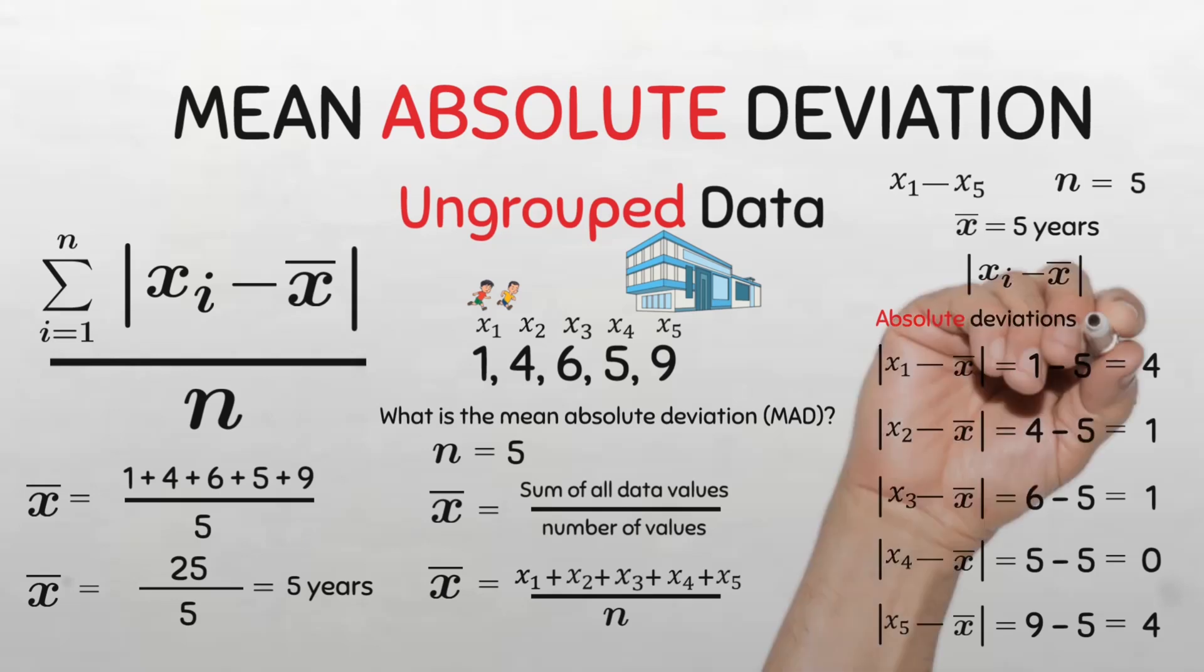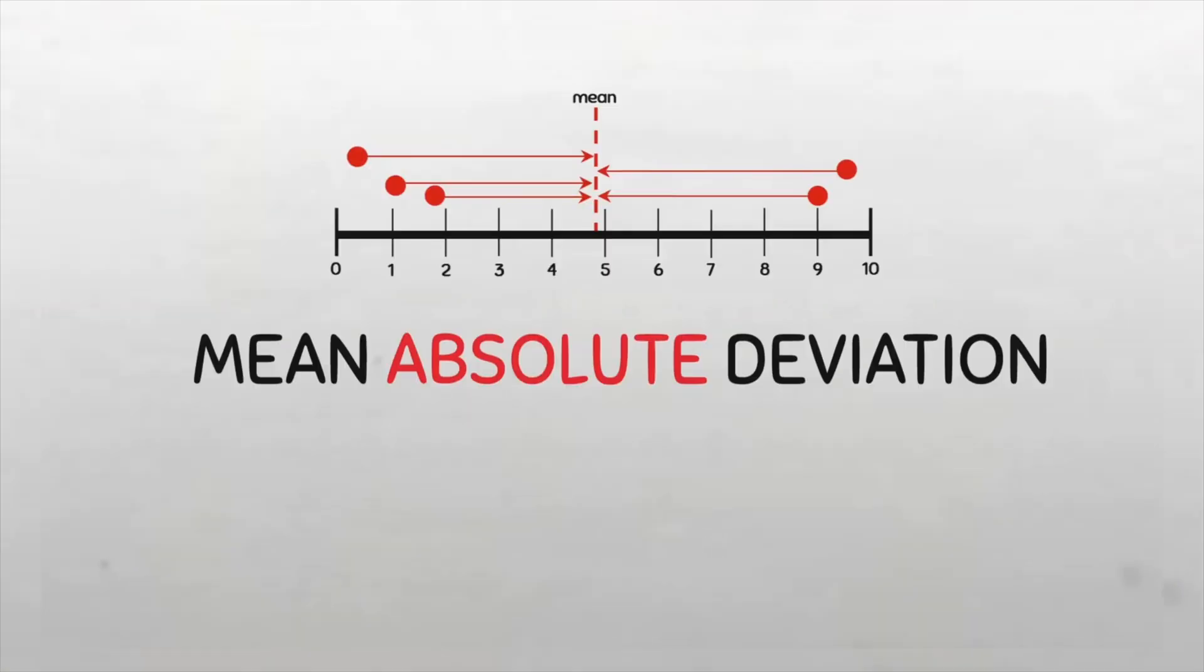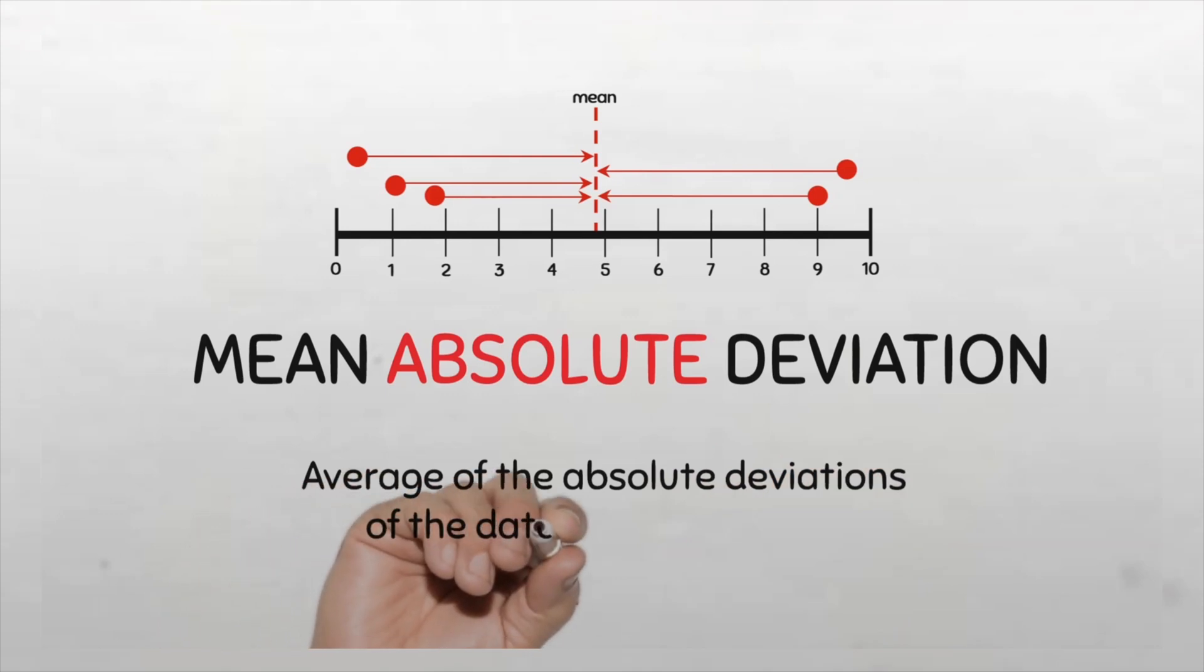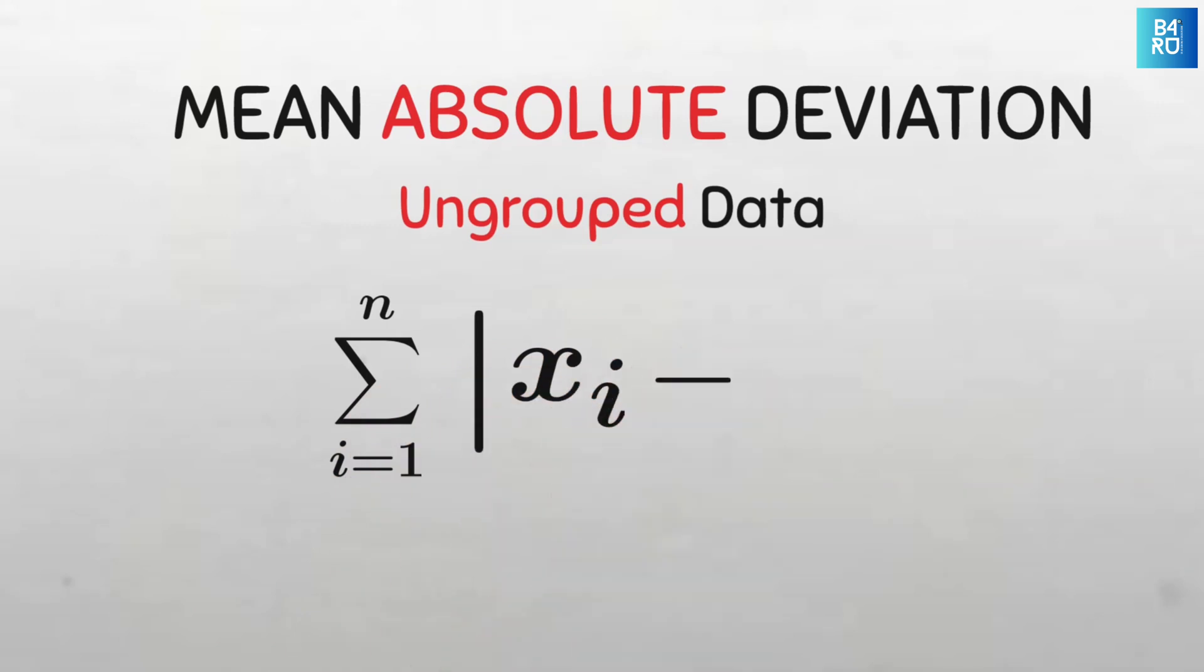Now we have all the absolute deviations. All that is left is to find the mean of these absolute deviations. Remember the definition of mean absolute deviation is the average of the absolute deviations from the mean. And according to the formula, we will need to sum all the absolute deviations together and divide by n, which is 5.